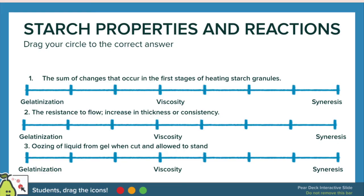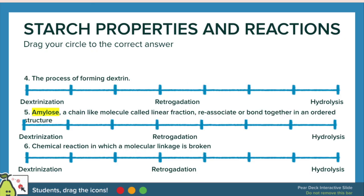The starch properties include: number one, gelatinization — the sum of changes that occur in the first stages of heating starch granules. Viscosity is the increased thickness or consistency and resistance to flow. Syneresis is the oozing of liquid from a gel when left to stand. The process of forming dextrin is dextrinization. Amylose, a chain-like linear fraction molecule, can reassociate or bond together in an ordered structure called retrogradation. The chemical reaction in which a molecular linkage is broken is hydrolysis.